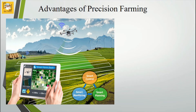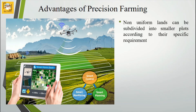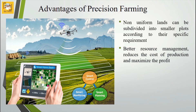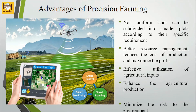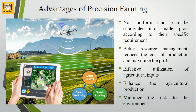The production advantages of practicing precision farming are: uneven lands can be subdivided into small plots according to specific requirements, as seen in the image. Better resource management reduces the cost of production and maximizes profit. Effective utilization of agricultural inputs — called smart planning — enhances agricultural production, called smart control. Minimizing risk to the environment and reducing pollution is achieved through smart monitoring of the farm.